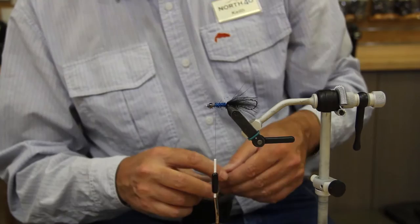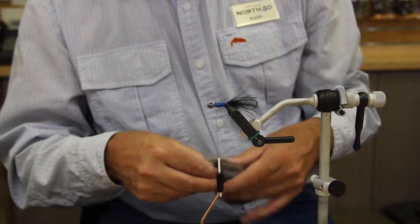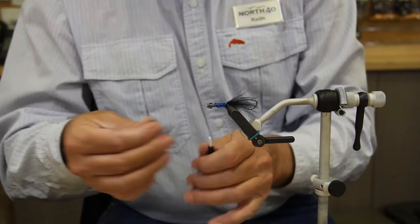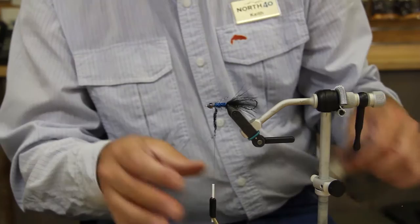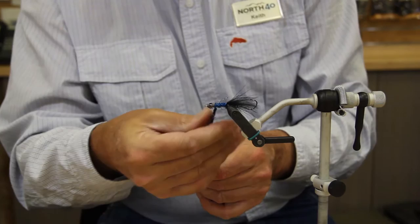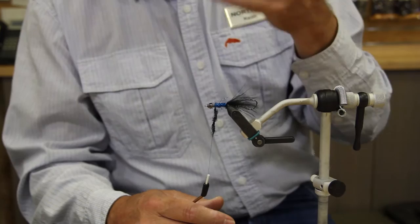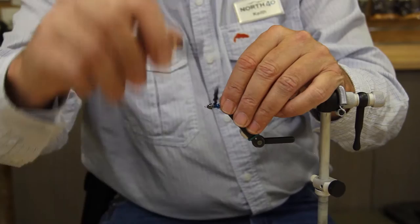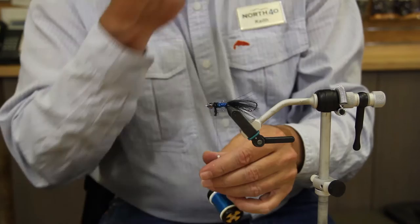Next we're going to do is we're going to take our ice dub in UV black. And we're just going to build up just a little bit of a ball right there. Kind of help your materials from here on out to flare out when they're on there. But you don't need a lot. You can tie this fly in any color combination that you prefer. Some of my favorite colors are of course the black with a little bit of blue, black with a little bit of red, straight up blue with just a hint of chartreuse, some pinks, some purples, just all depends on what you like.